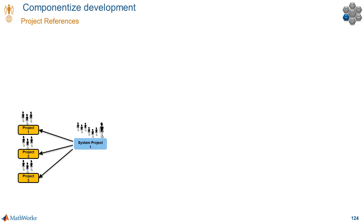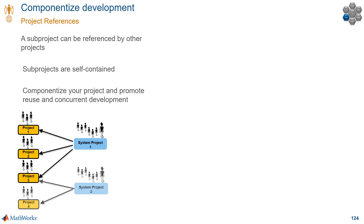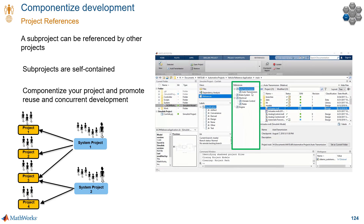In addition to source control integration, projects give you a way to componentize your development with project references. That means you can have projects that work with other projects, and the goal is to help you componentize the development. You can explore the full project reference hierarchy and the associated files directly from your project. You can view all references in a hierarchy and view all the files and modifications for a specific reference.